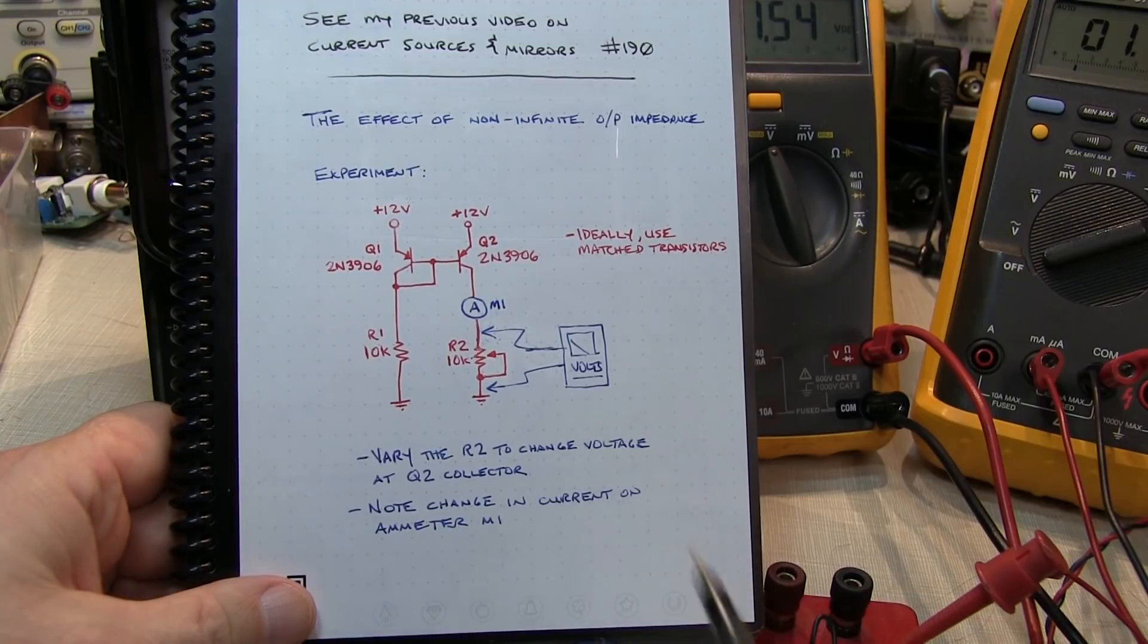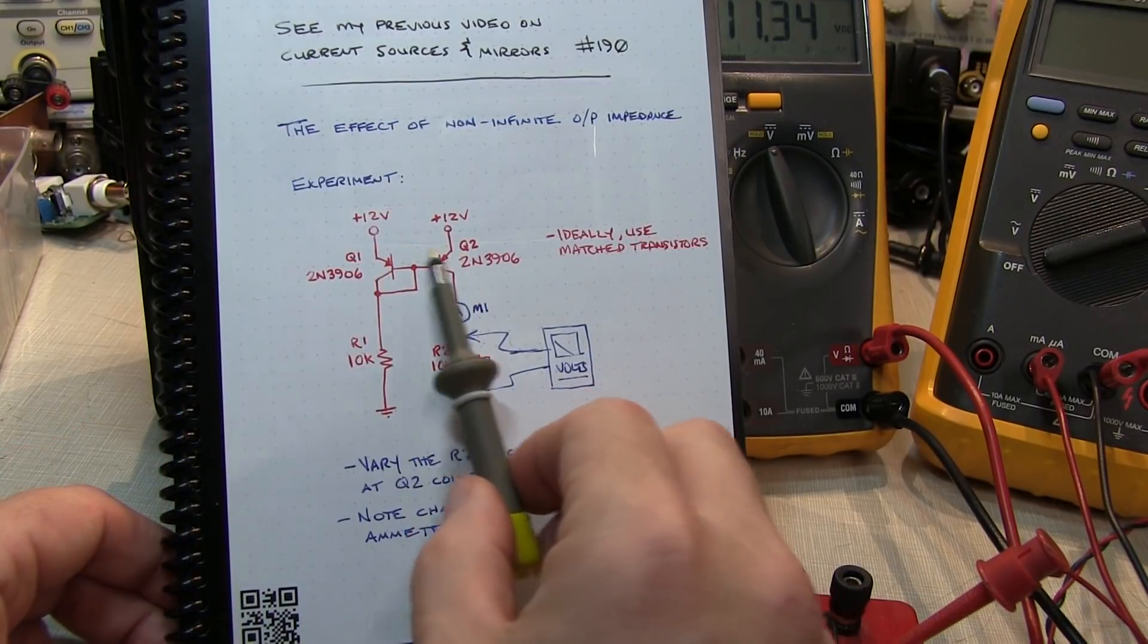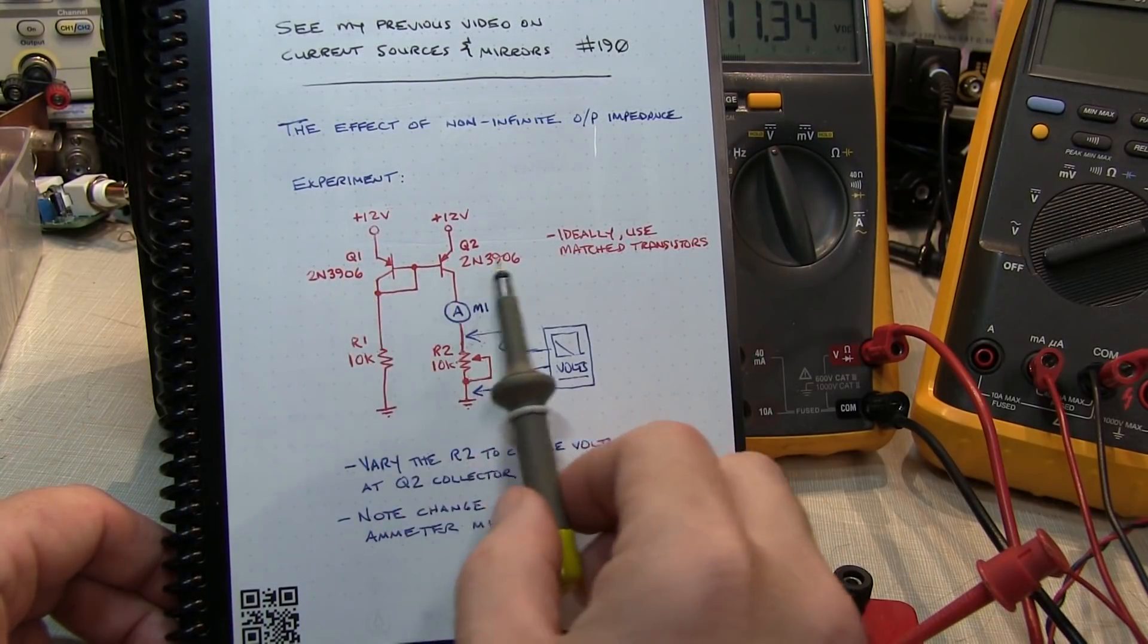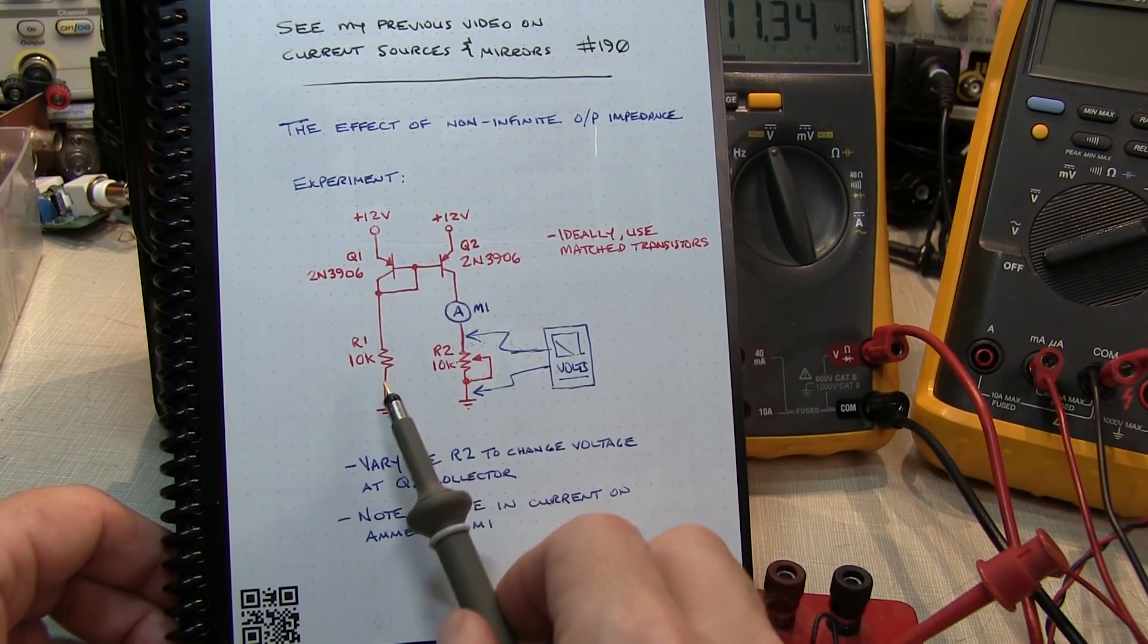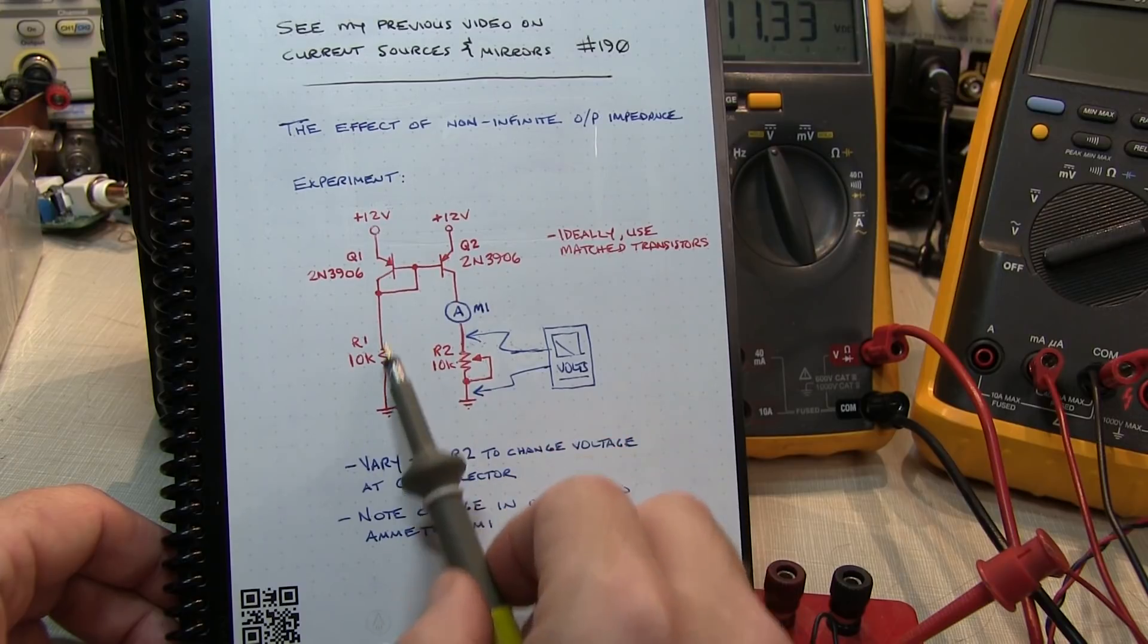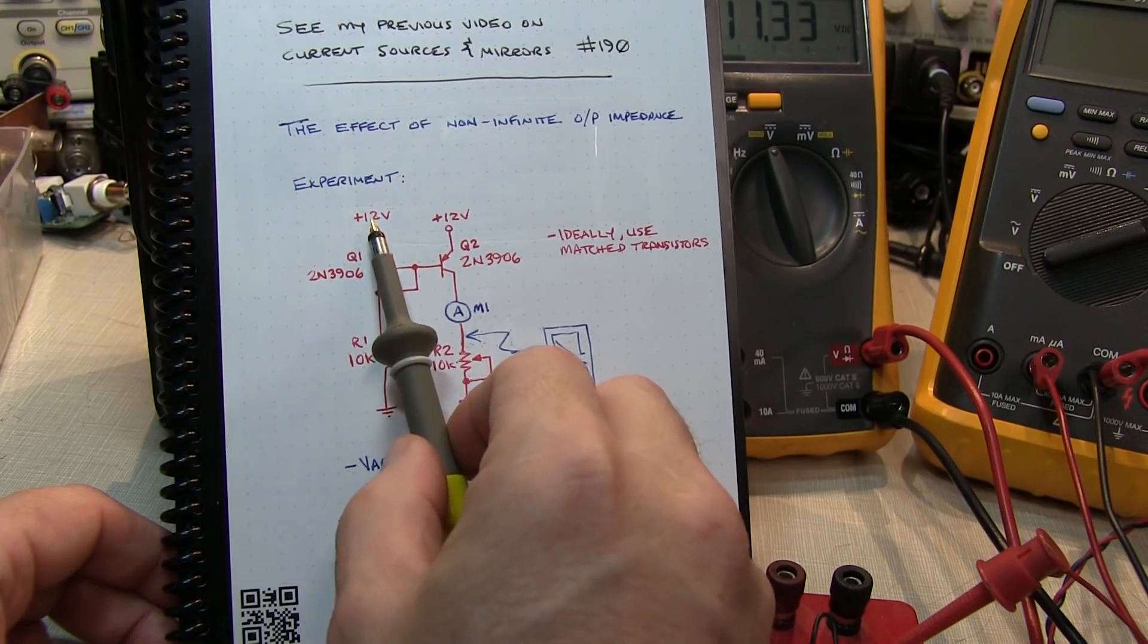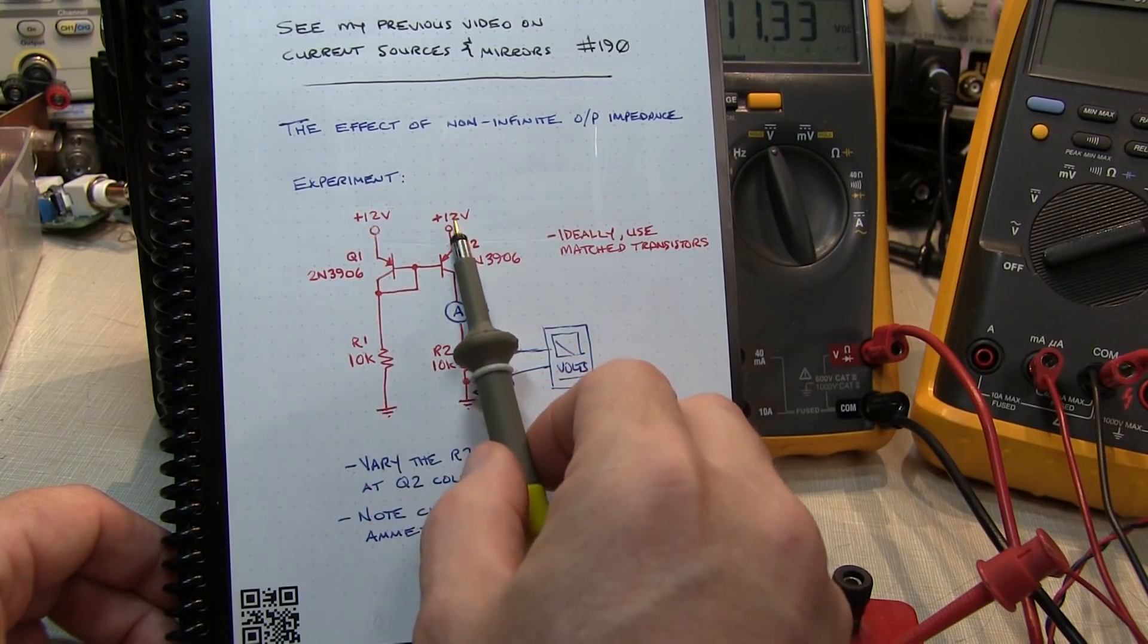So here's how we can actually go look at that. We've got a simple PNP current mirror set up with a pair of fairly closely matched 2N3906 PNP transistors, a fixed 12V supply, and a single fixed 10K resistor that sets up a current in Q1, which is then mirrored in Q2.